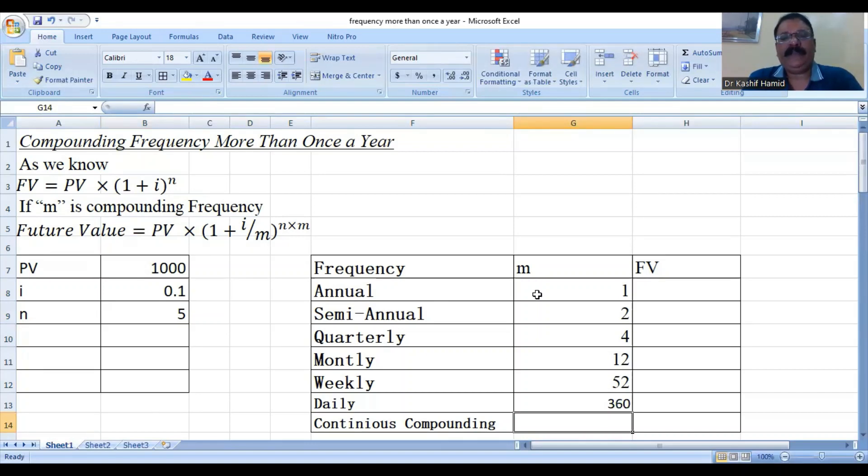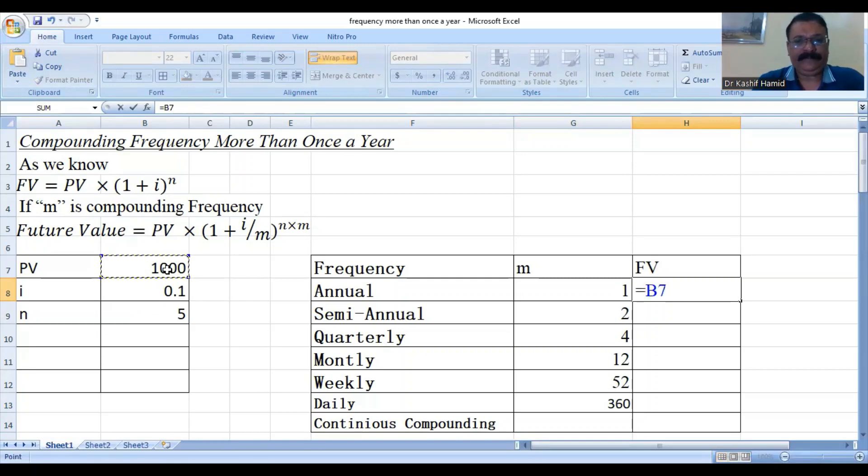we will use the exponential value for computing the future value. So, let's, in first instance, we will compute the future value in an annual spectrum is equal to 1000 multiplied 1 plus interest rate divided by frequency and its power will be n multiplied our M value. So, here we will model this computation.